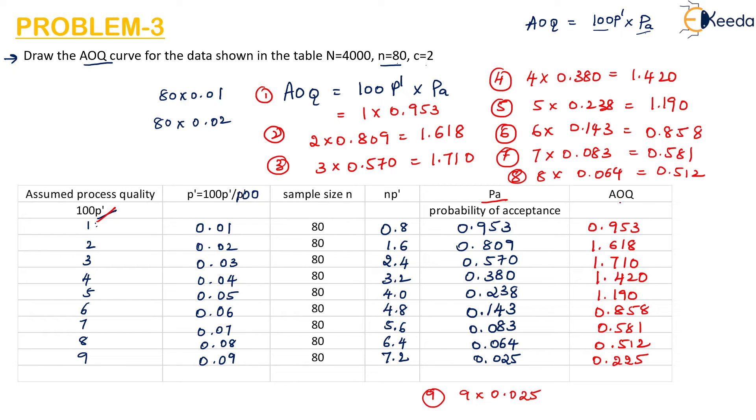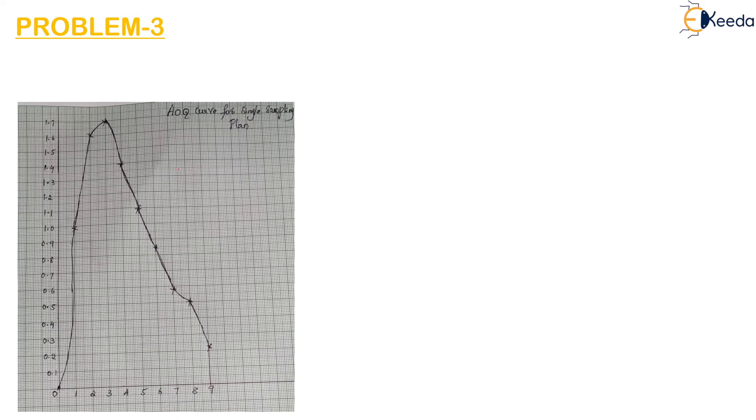This is the AOQ or the average outgoing quality and now we are going to draw the curve. Here we will take up the AOQ values and here is the P' or 100P' value which are the assumed values from 0 to 9. For the first term, the AOQ value is 0.95, which is somewhere here. We will begin it with 0. Then for the second term, we can see that the value is 1.618 which is somewhere around here and I have marked it here.